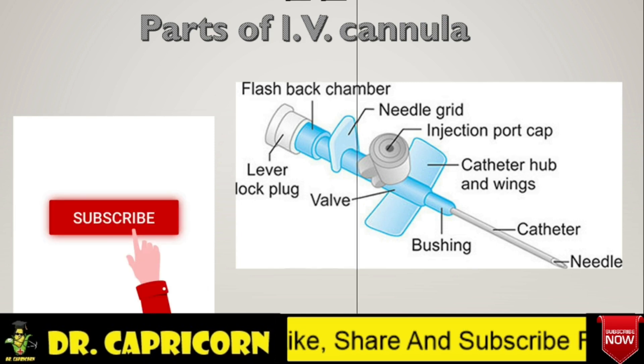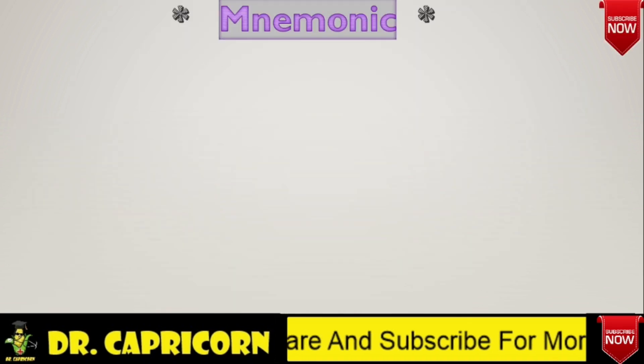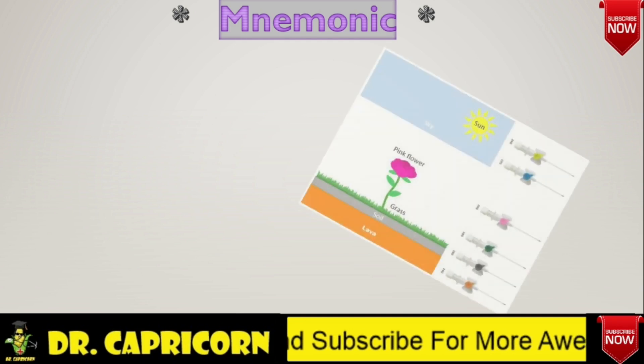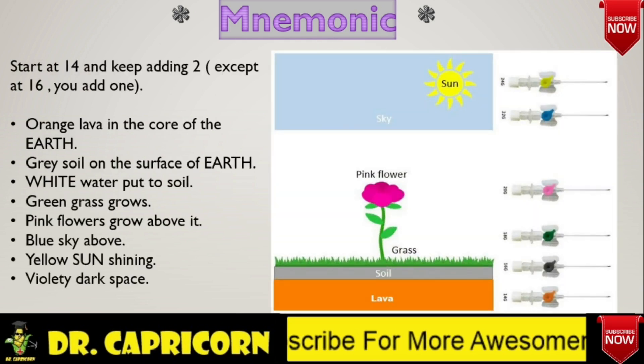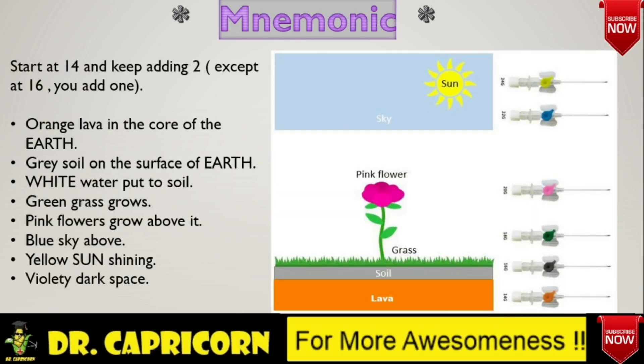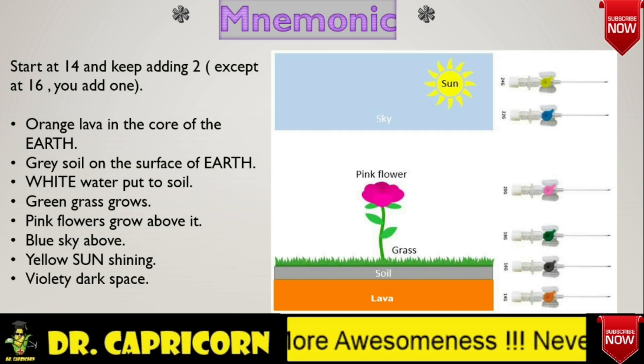Now let's learn the various color codes of cannulae according to their size with the help of a mnemonic. Start at 14 gauge cannula and keep adding 2, except at 16 gauge where you add 1.